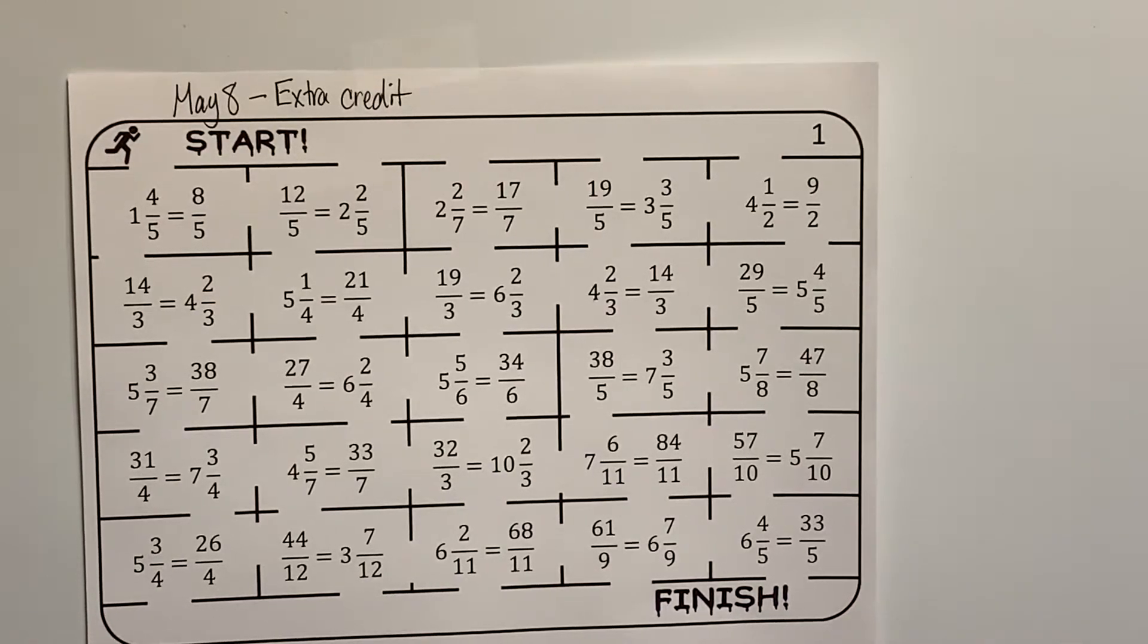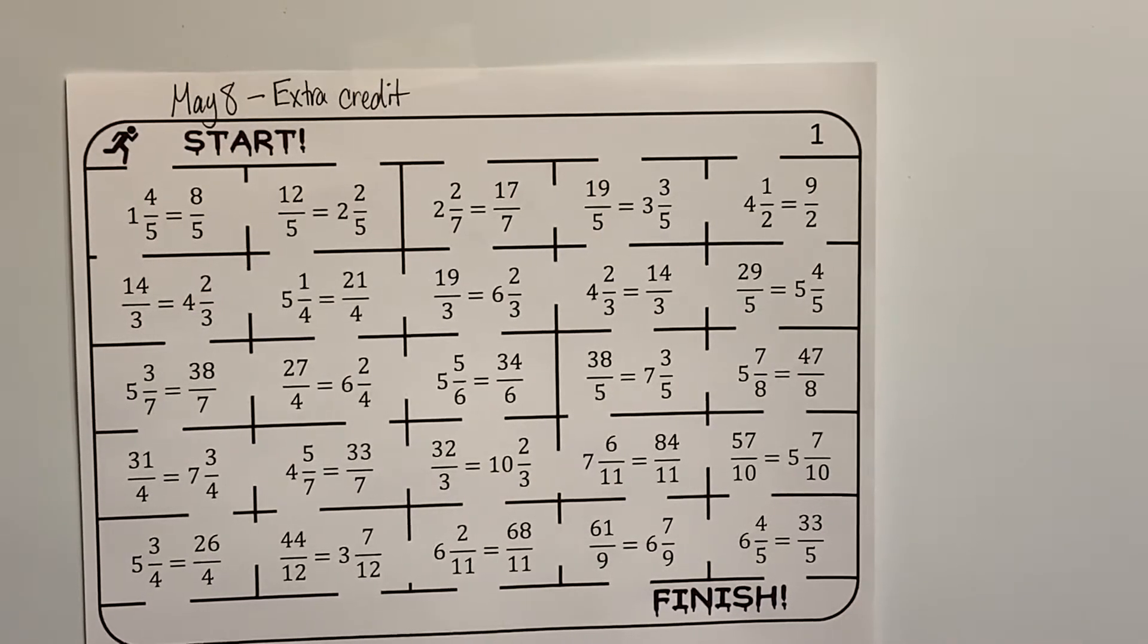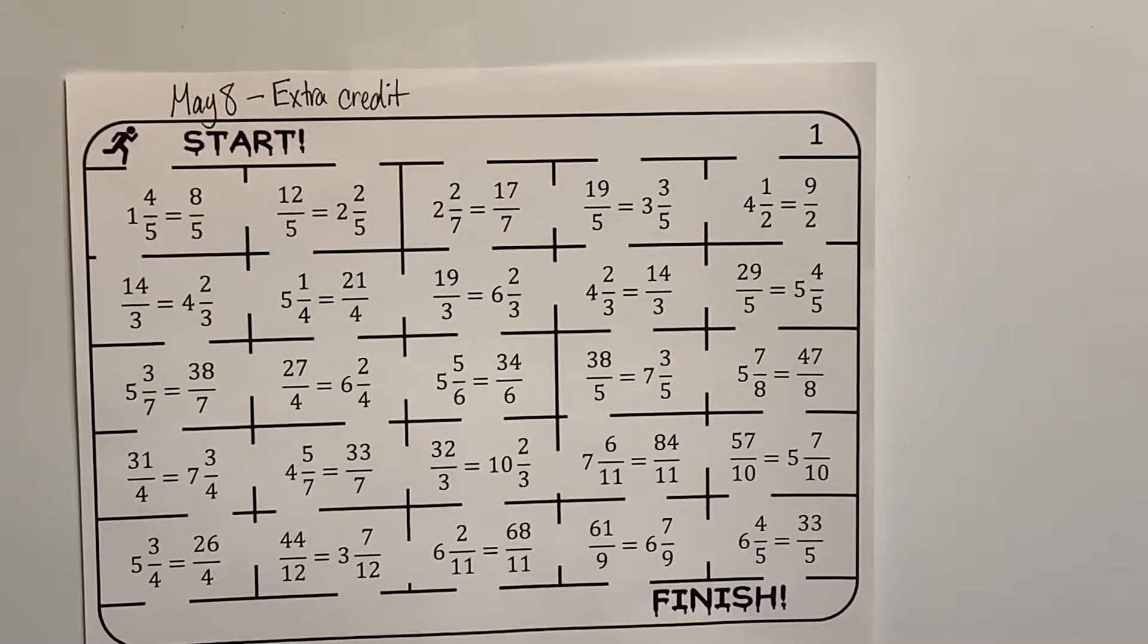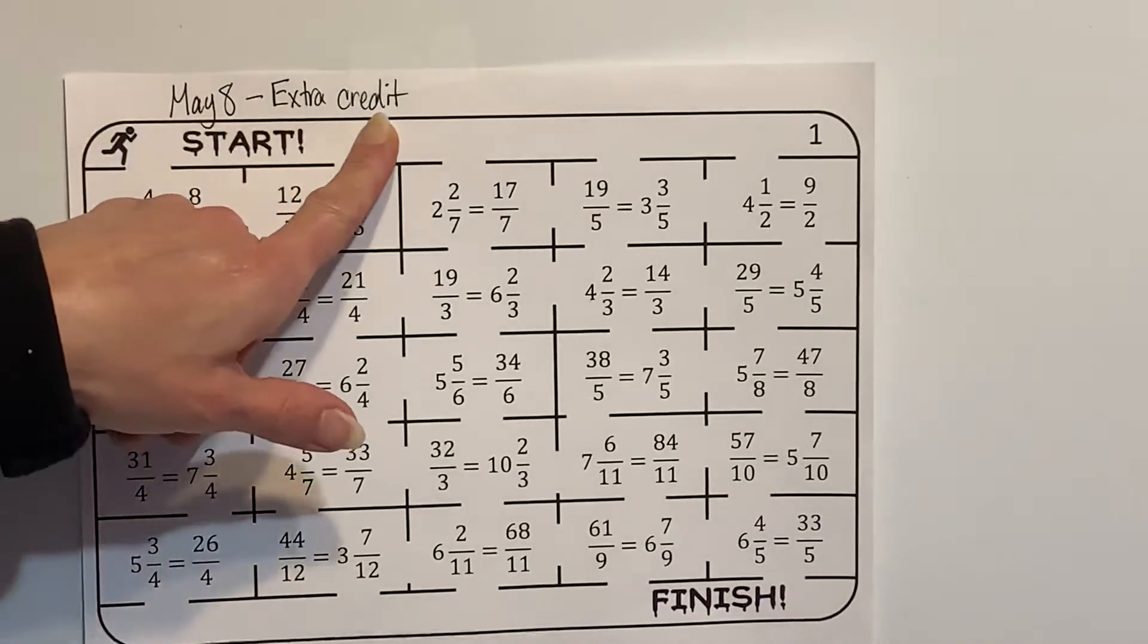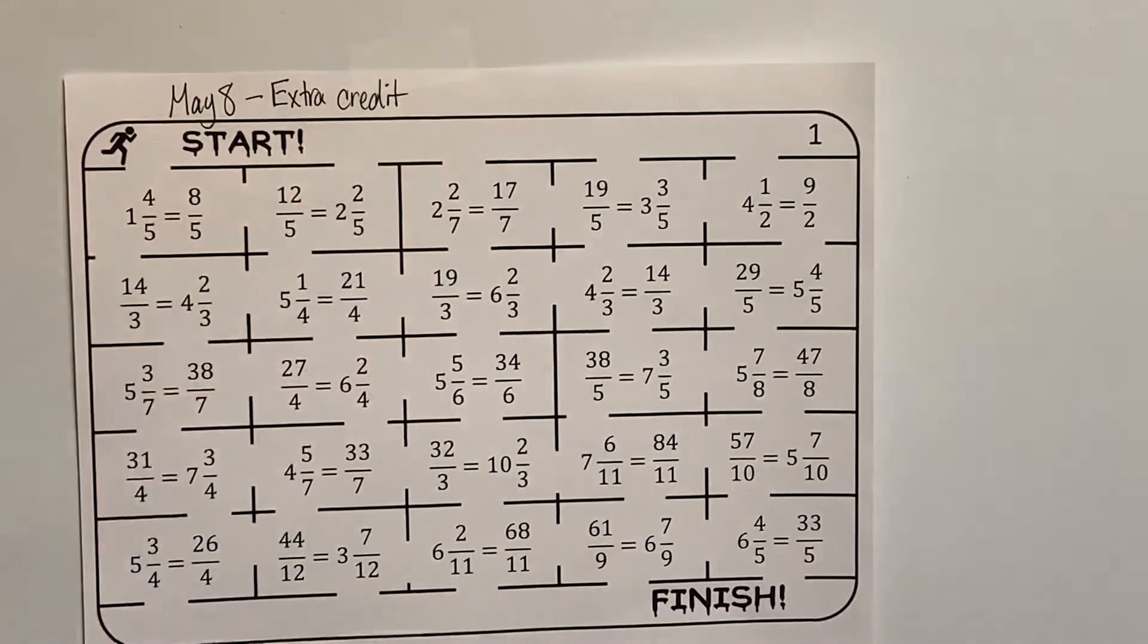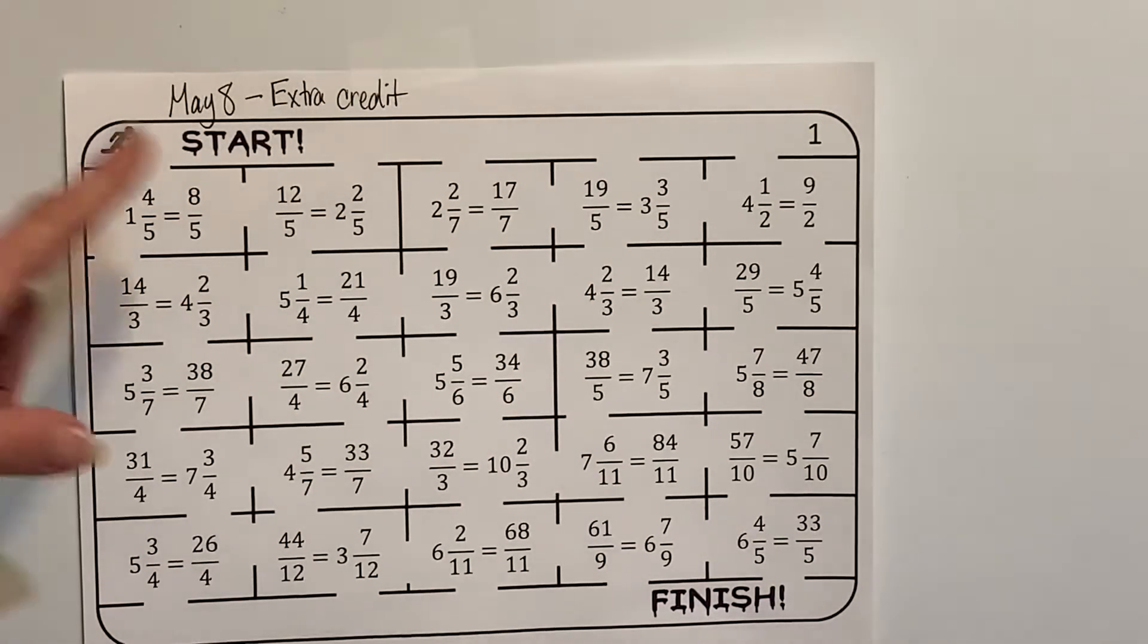All right, fifth grade mathematicians, so today what we're going to do is we have a challenge page and this challenge page is for extra credit. So there's a maze and you have to color in all of the spaces that have the mixed number and the improper fraction are equivalent.